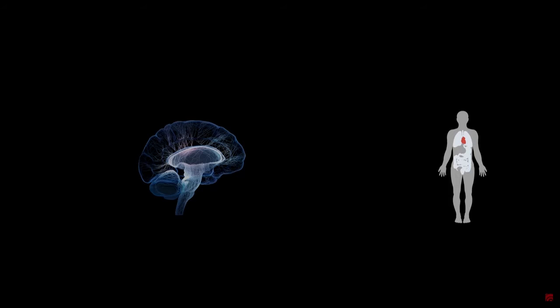How can we study that? We need at least two things. First, we know this is a circular problem — beliefs influence how we regulate the body, the body feeds back into the brain, and they're constantly chit-chatting. We don't know if information is coming from the body or from the brain, so we need to monitor each part of the system. One trick is to monitor the heart, which is relatively easy to do using ECG.